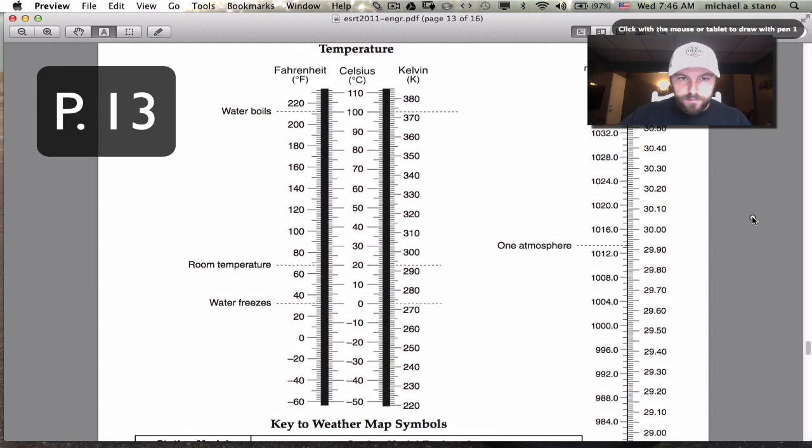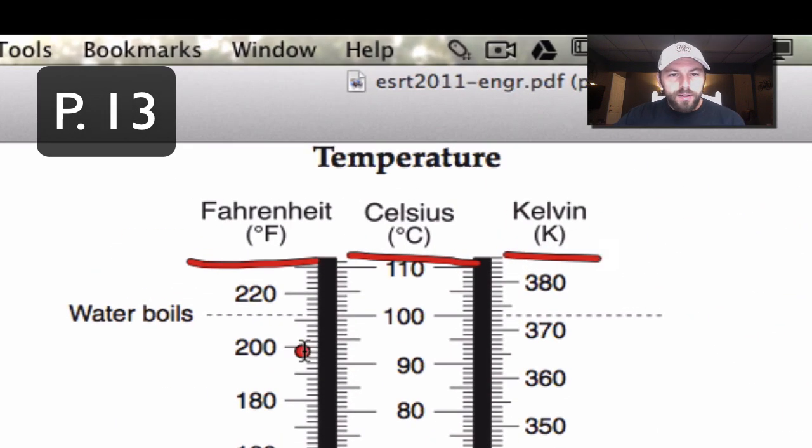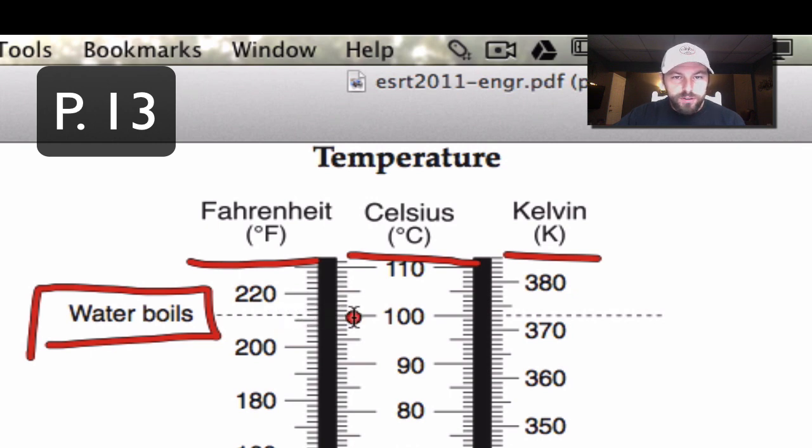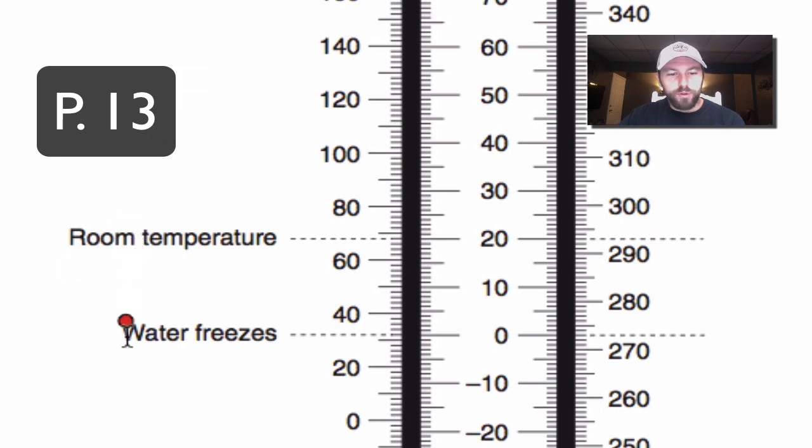You can see here we have our temperature scale. We have Fahrenheit on the left, Celsius in the middle, and then Kelvin on the right-hand side. Notice that we have some common numbers that we should be familiar with, like the temperature at which water boils. Here, if you look over, is about 212 degrees Fahrenheit, which is equal to 100 degrees Celsius, or 373 Kelvin. We also have room temperature and the temperature at which water freezes, all here on this scale.